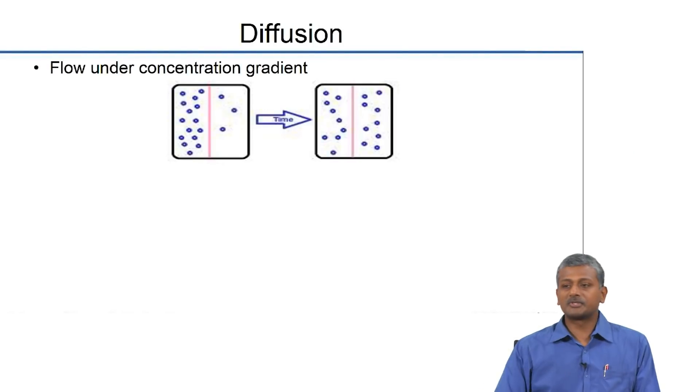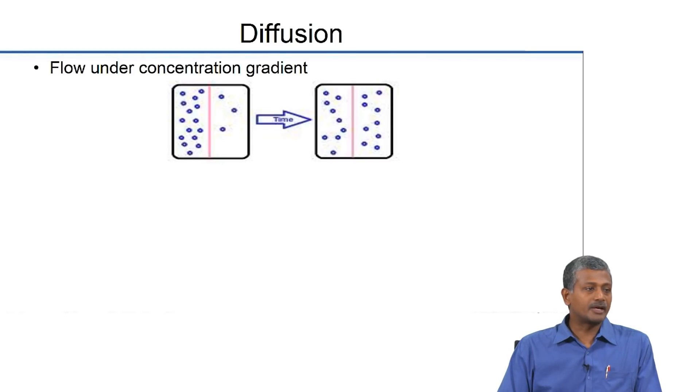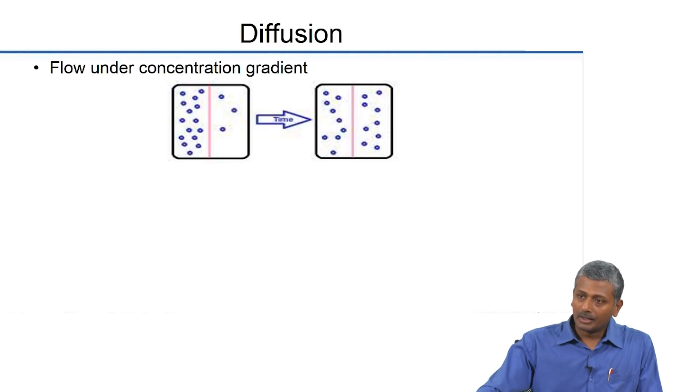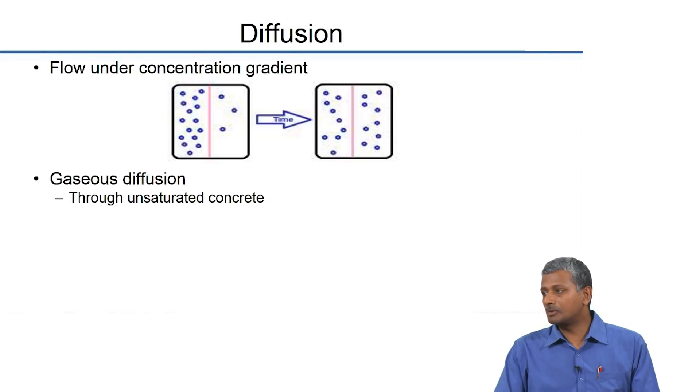Good morning everyone. Yesterday we were talking about different kinds of transport mechanisms that led to concrete durability problems. We first saw that there are many different transport mechanisms that either happen individually or in combination depending upon the kind of service environment. We started talking about diffusion, which is basically the flow under a concentration gradient. Ionic species will tend to diffuse through semipermeable barriers from locations of high concentration to locations of low concentration until some sort of equilibrium is reached.